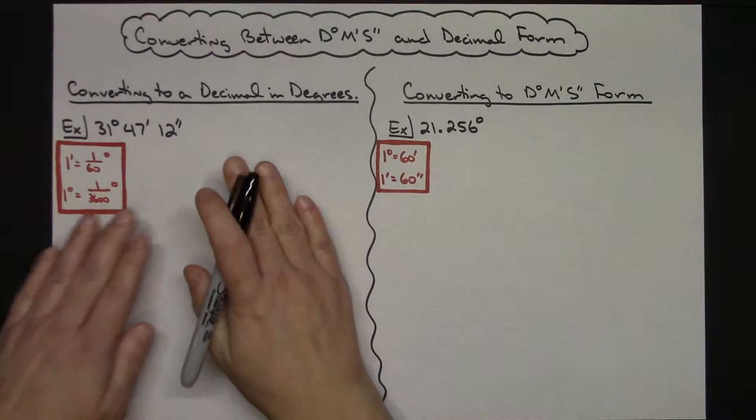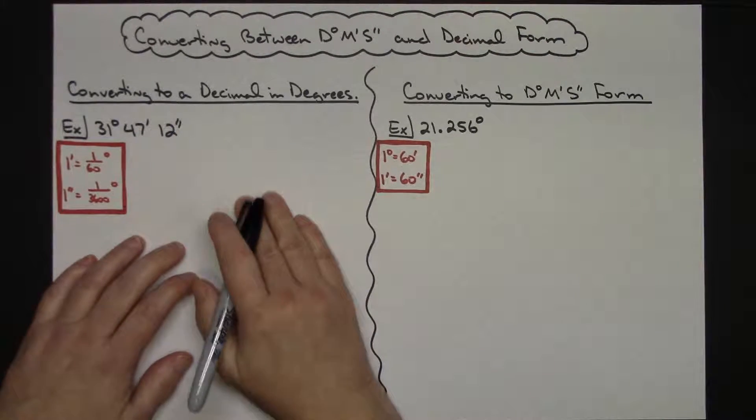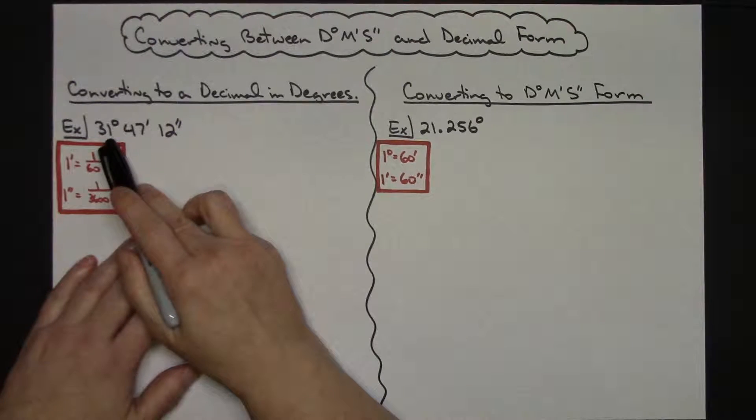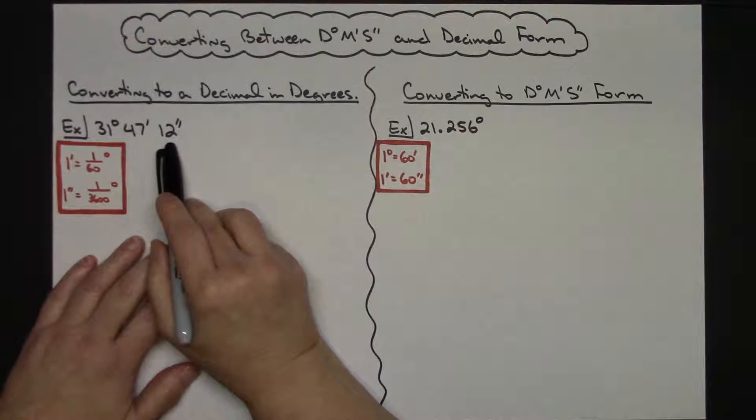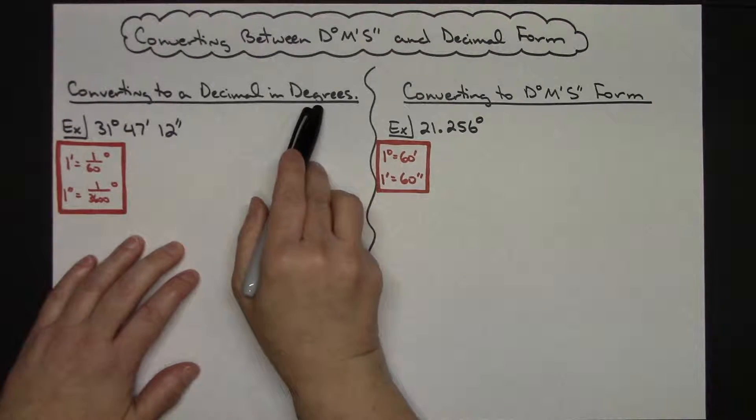In my first example here on the left I'm going to be converting 31 degrees, 47 minutes, 12 seconds to a decimal in degrees.